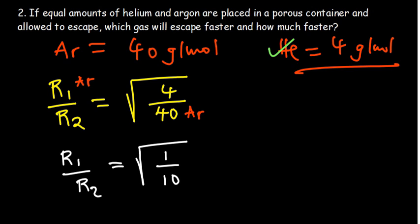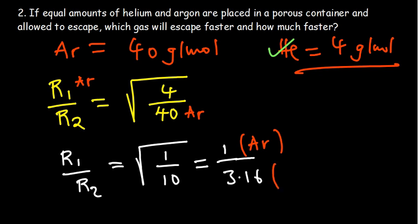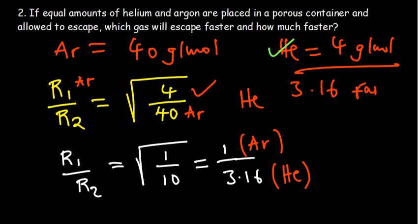Distributing the square root: the square root of 10 is approximately 3.16, rounded to two decimal places. From Graham's law, the lighter gas effuses faster, so we expect helium to effuse faster. The ratio works out so that helium, being lighter, gets the larger value. Therefore, helium will effuse 3.16 times faster than argon.